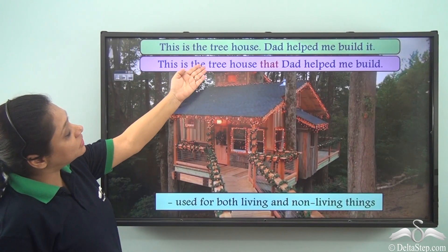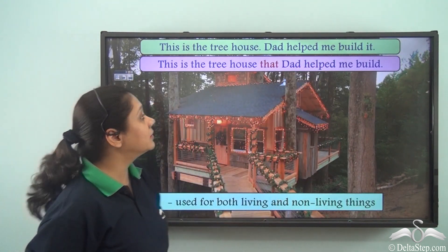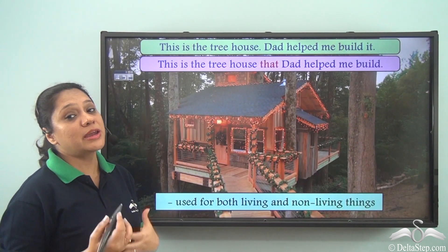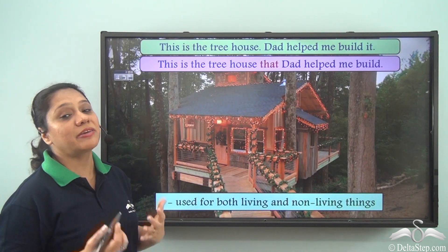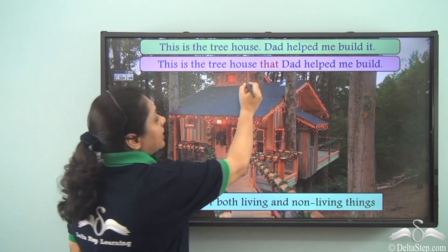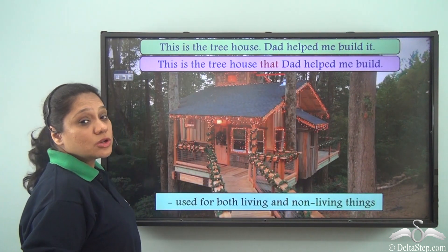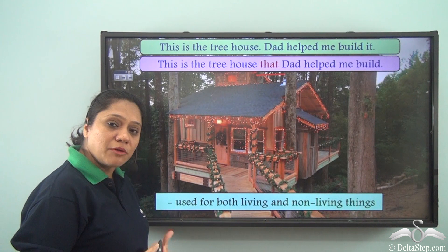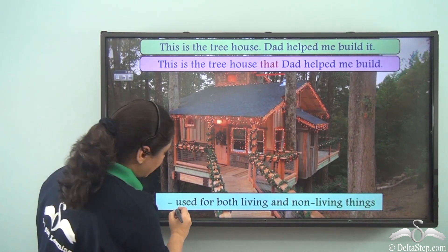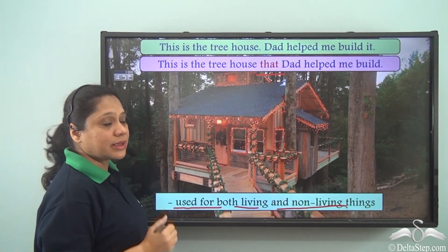Now we can join two sentences about a tree house by using a relative pronoun and write a single sentence using the relative pronoun 'that.' Remember, 'that' is used for both living and non-living things.